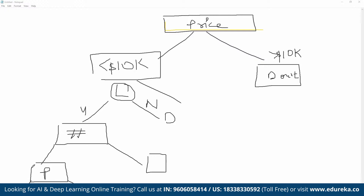So basically, we are defining multiple decisions here, and that's how the decision tree is divided into branches.